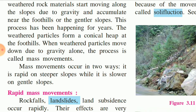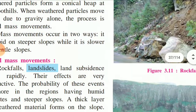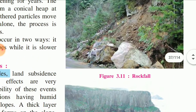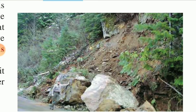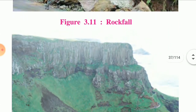Mass movement occurs in two ways. It is rapid on steeper slopes, while it is slower on gentler slopes. When the mountain is very steep, the material falls down quickly. On the other hand, if it has a very gentle slope, it comes down slowly. In the next part, we are going to study rapid mass movement and slower mass movement.